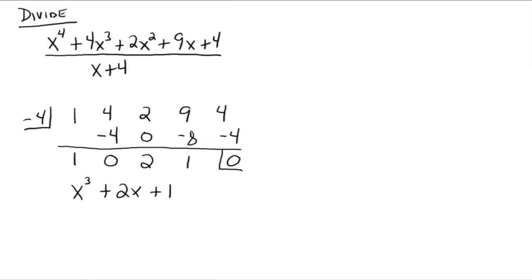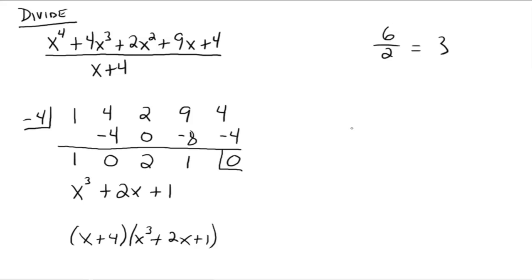So really what we can say now is this 4th degree polynomial has been factored. If we take x plus 4 and multiply it by x cubed plus 2x plus 1, you're going to come up with the original polynomial. If you take the divisor and the quotient when there's no remainder and multiply those two things together, you get the dividend — the polynomial you were dividing into. Think of it as 6 divided by 2 equals 3, well 2 times 3 equals 6. So x plus 4 times x cubed plus 2x plus 1 equals x to the 4th plus 4x cubed plus 2x squared plus 9x plus 4. The whole point of this video was to make sure you understand how to do synthetic division. Once you try a couple of them, everything should go pretty smooth. Study well — please let me know if you have any questions.